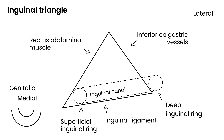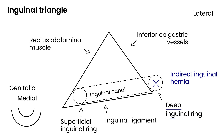The key distinction in this diagram is the difference between direct and indirect hernias. An indirect inguinal hernia protrudes through the deep inguinal ring and is lateral to the inferior epigastric vessels. A direct inguinal hernia comes out medial to the inferior epigastric vessels and protrudes directly through the abdominal wall.